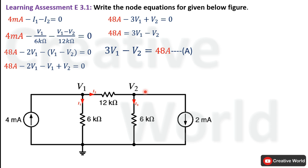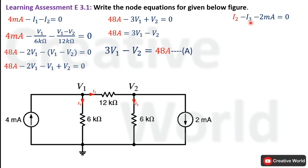Similarly, we will find the node equation for the second node. On this node one current is entering — that is I2 — while two currents are leaving: I3 and 2 mA. The KCL equation takes I2 with a positive sign because it is an entering current, while the other two currents are leaving and taken with negative signs.